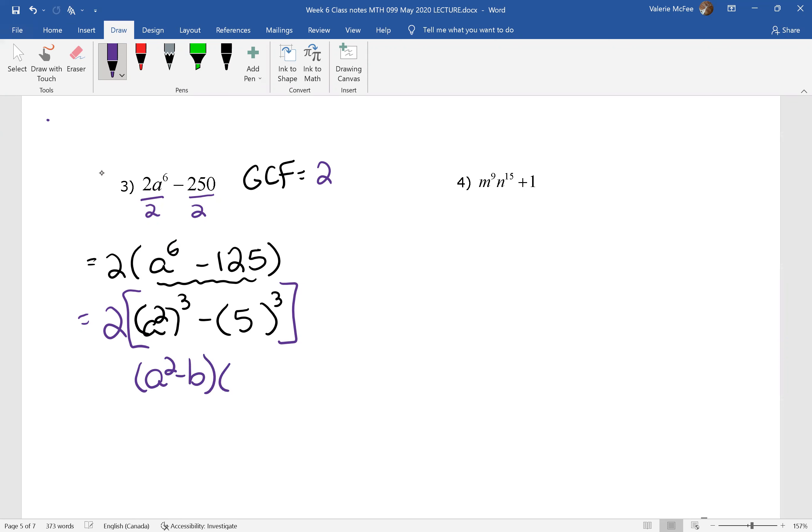Times a². a² times a², that's going to be a⁴ plus a times b, 5 times a² plus b². And of course, we keep our greatest common factor in front.